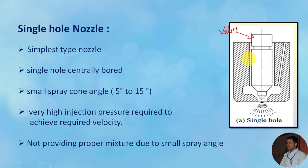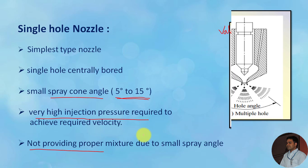Single hole nozzles create a very small spray cone angle ranging between 5 to 15 degrees. Due to this, it requires very high injection pressure to inject fuel into the compressed air. The small spray cone angle doesn't provide proper mixture formation. These drawbacks are overcome with multi-hole nozzles.